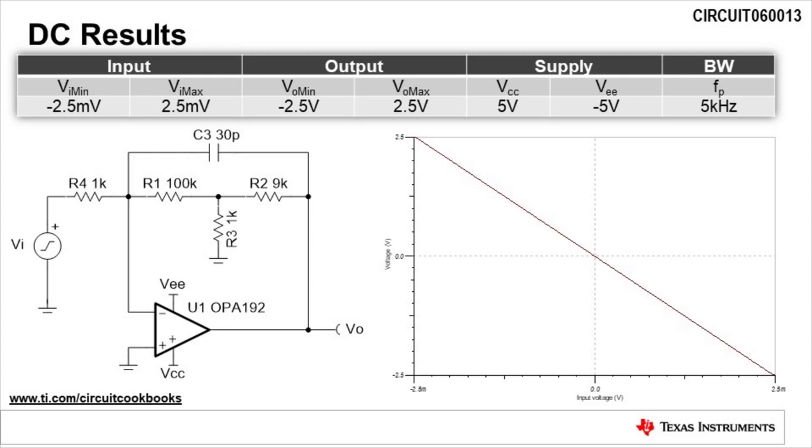A DC sweep of the input voltage from negative 2.5 millivolts to positive 2.5 millivolts yields an output voltage from 2.5 volts to negative 2.5 volts. This verifies the functionality of the circuit.